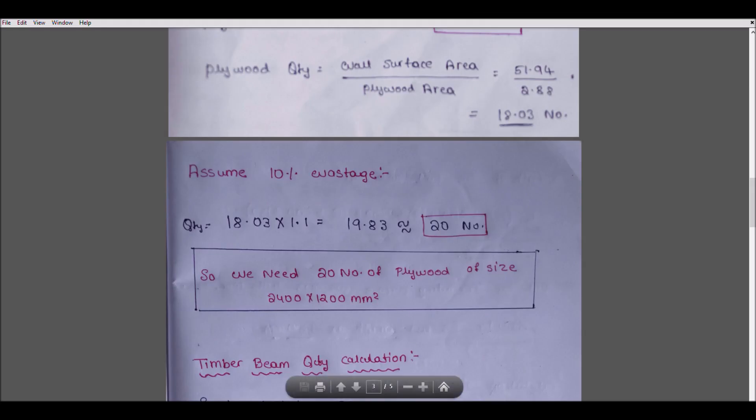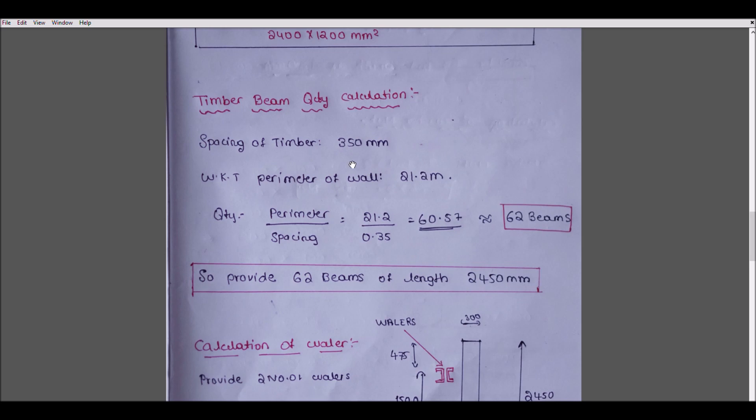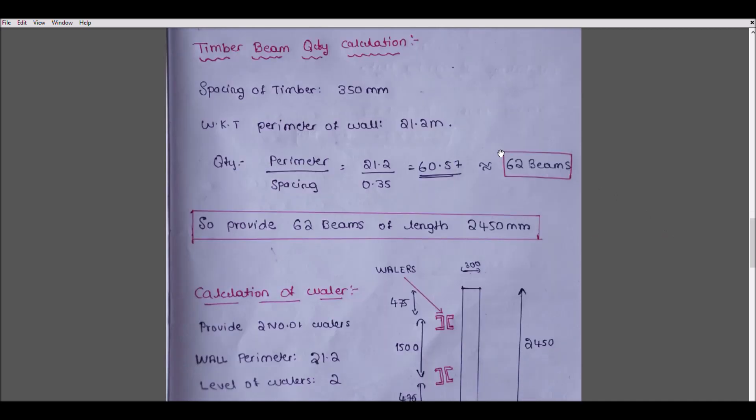Now we will go to timber beam. The spacing of timber is 350mm. The perimeter of the wall is 21.2 meters. The quantity is perimeter divided by spacing: 21.2 ÷ 0.35 = 60.57 meters. I will consider 62 beams for safety. So provide 62 beams of length 2.45 meters.